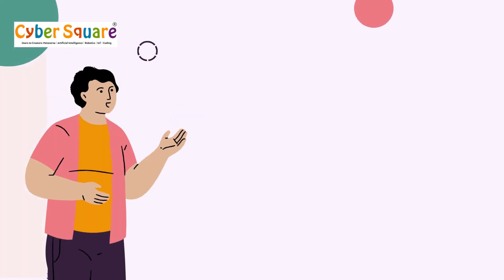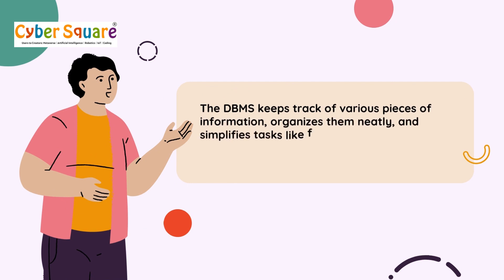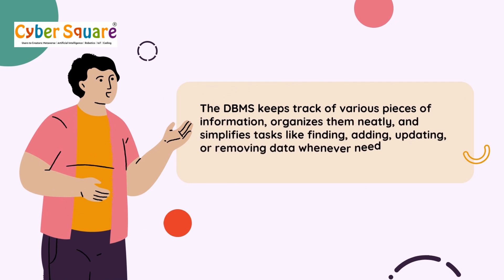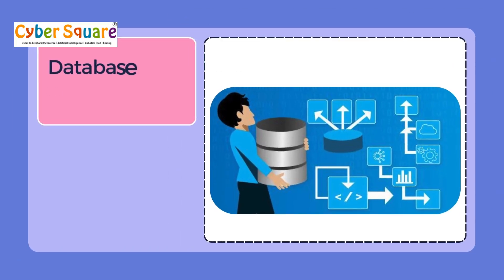The DBMS keeps track of various pieces of information, organizes them neatly, and simplifies tasks like finding, adding, updating, or removing data whenever needed. There are various types of database models, each with its way of storing data and organizing the logical structure of the database.